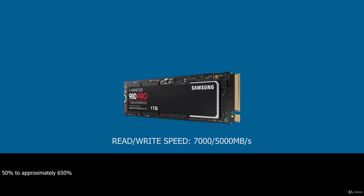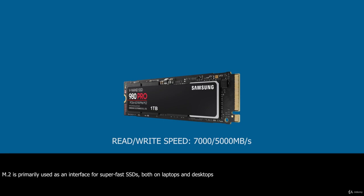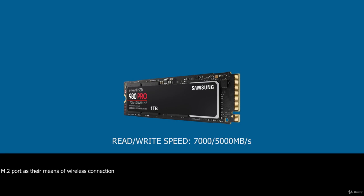If you have the opportunity to use an M.2 SSD on a motherboard that supports PCIe generation 3 or 4, it can be significantly faster than a regular SATA drive. At the moment, M.2 is primarily used as an interface for super-fast SSDs, both on laptops and desktops. Some laptop designs also use an M.2 port as the means of wireless connection, mounting tiny low-powered cards that combine WiFi and Bluetooth radios. This is less common for desktops, where the ease of a USB dongle or PCIe x1 card is preferred.